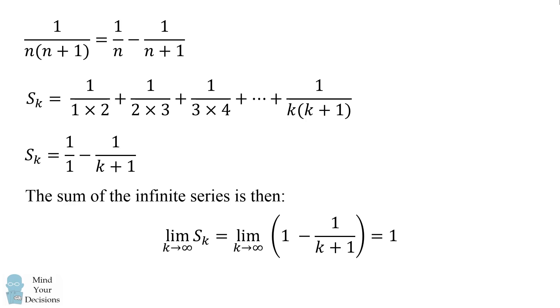Now 1 over k plus 1 will go to 0, and therefore our infinite series will have a sum that's exactly equal to 1. So that's the answer to this problem.